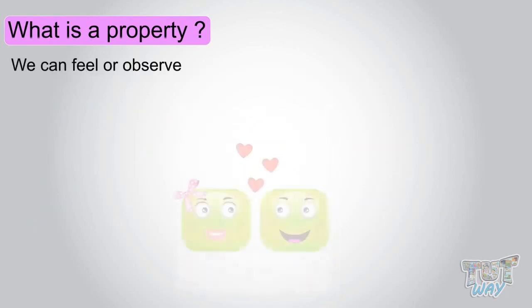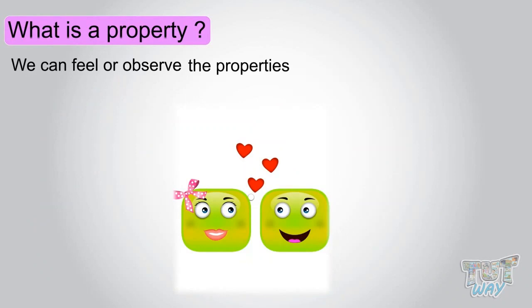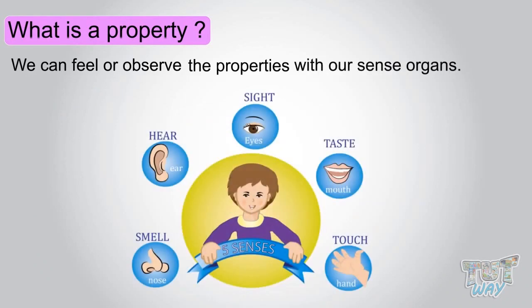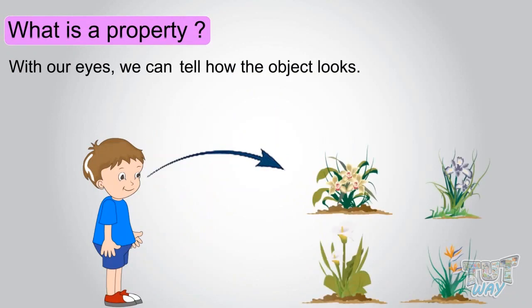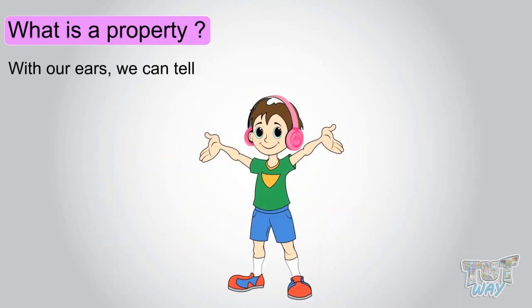We can feel or observe the properties with our sense organs. With our eyes, we can tell how the object looks. With our ears, we can tell how the object or material sounds.